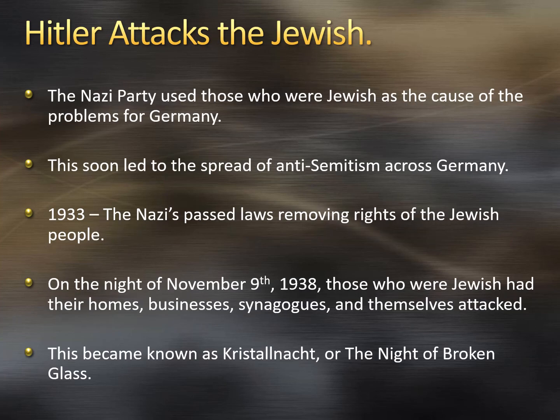Another big platform of the Nazis was attacking Jewish people. The Nazi Party used those who were Jewish as scapegoats for Germany's problems. This led to the spread of anti-Semitism across Germany. In 1933, the Nazis passed laws removing the basic rights of Jewish people. On the night of November 9th, 1938, Jewish homes, businesses, and synagogues — and even people themselves — were attacked, and some were murdered. This became known as Kristallnacht, or the Night of Broken Glass.